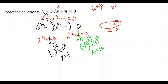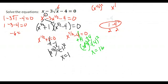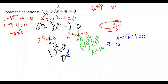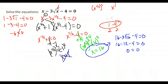We have two potential solutions: x equals 16 and x equals 1. We must check both because we had a radical equation. Checking x equals 1: substituting gives 1 minus 3 times the square root of 1 minus 4, which is 1 minus 3 minus 4 equals negative 6, not zero. So x equals 1 is extraneous. Checking x equals 16: 16 minus 3 times the square root of 16 minus 4 gives 16 minus 3 times 4 minus 4, which is 16 minus 12 minus 4 equals 0. Yes! So x equals 16 is the only solution. When you have radicals, always check your answers.